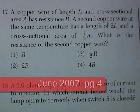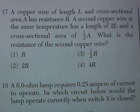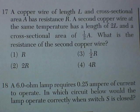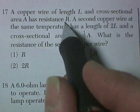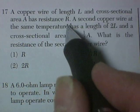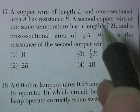June of 2007, page 4. Question number 17. Copper wire of length L, cross-sectional area A, has resistance R. Alright, this is a proportionality question, no actual numbers.